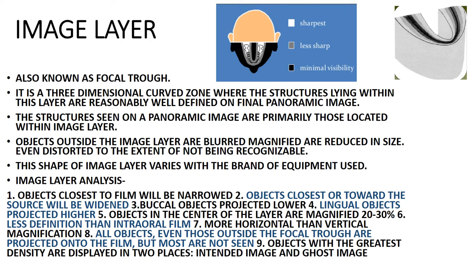The shape of the image layer varies with the brand of equipment used. In image layer analysis: objects lying close to the film appear narrower; objects close to the source appear widened; buccal objects are projected lower; lingual objects are projected higher; objects in the center of the layer are magnified 20 to 30 percent. Panoramic imaging is less defined than intraoral, with more horizontal magnification than vertical. All objects — even those outside the image layer — are projected onto the film but won't be recognizable. Objects with the greatest density are displaced in two planes: the intended image and the ghost image.